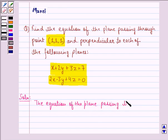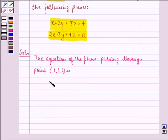passing through the point (1,1,1) is a(x-1) + b(y-1) + c(z-1) = 0.